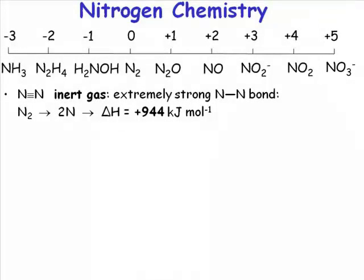We get essentially everything in between. The obvious place to start when you're surveying an element is with the element in its elemental form. There is only one allotrope of nitrogen, the N2 triply bonded molecule.